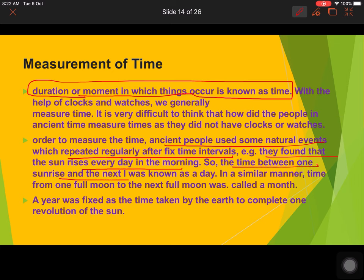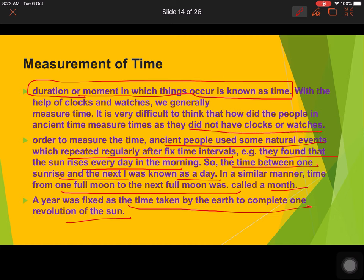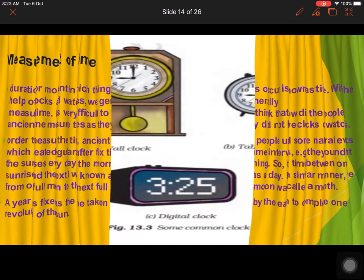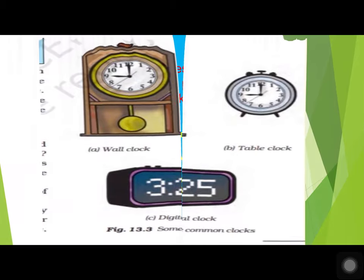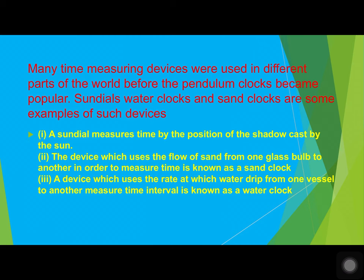Similarly, the time from one full moon to the next is called a month, and a year is defined by the Earth completing one full revolution. Nowadays we use different clocks and watches — wall clocks, table clocks, and digital clocks which can even tell fractions of a second. Many devices were used in different parts of the world before pendulum clocks became popular.